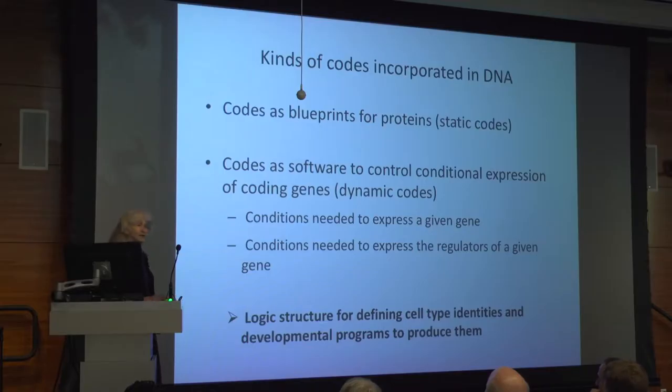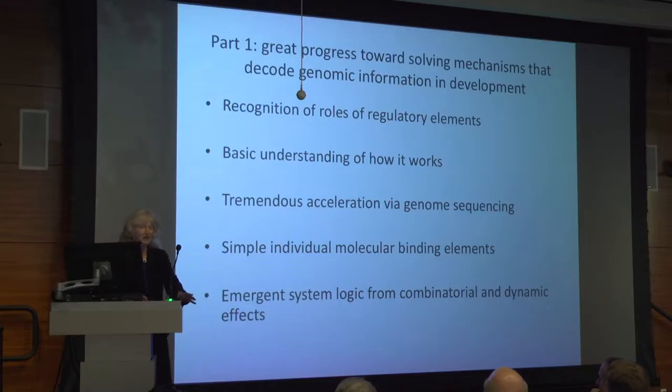If you zoom out, what this is essentially doing is defining the structure of an entire gene network for defining cell type identities and also the developmental program that generates them from a single cell — the fertilized egg. In the last 30 years, there's been enormous progress towards solving some of the mechanisms that decode genomic information in development, and Lee's impact has been considerable on this.